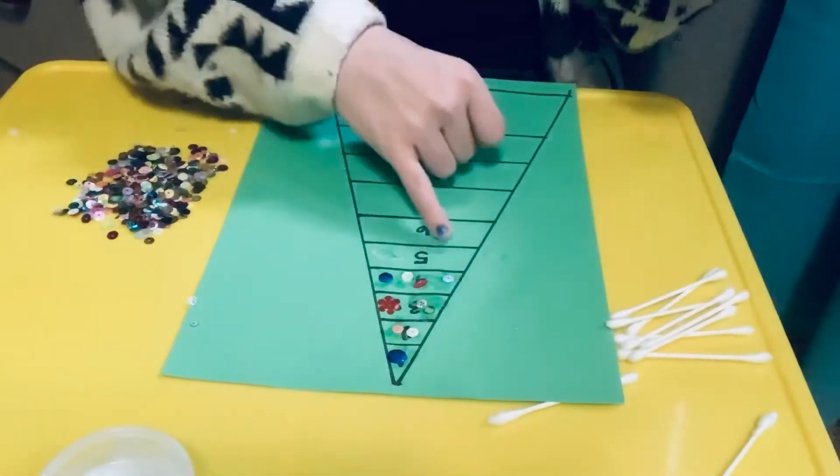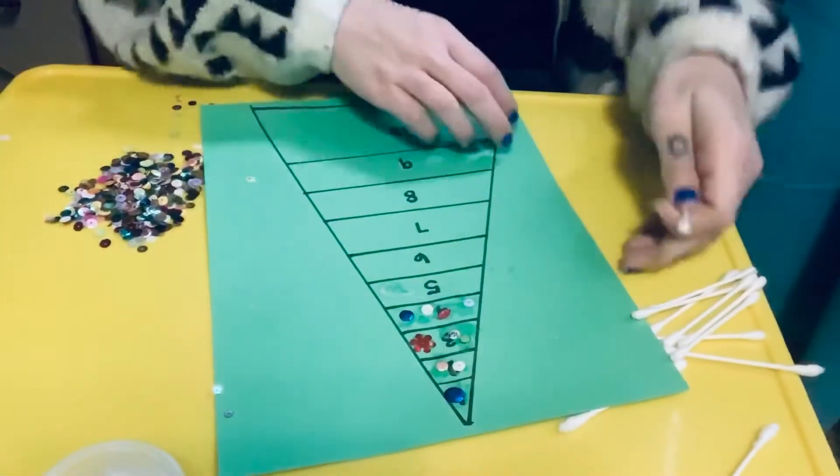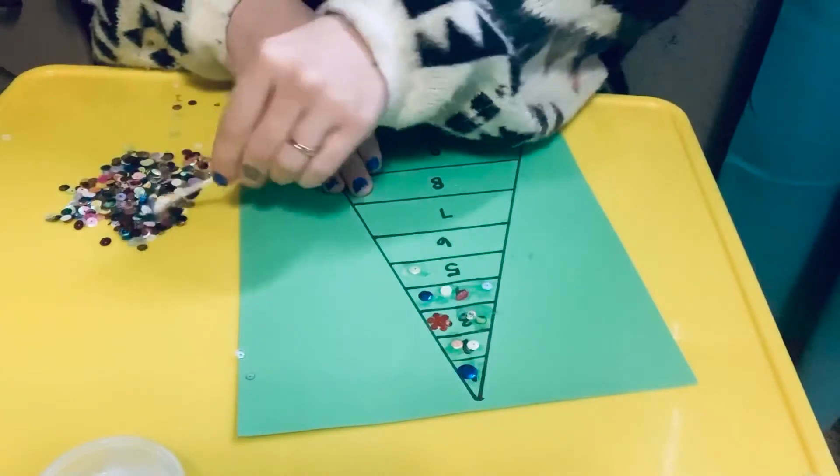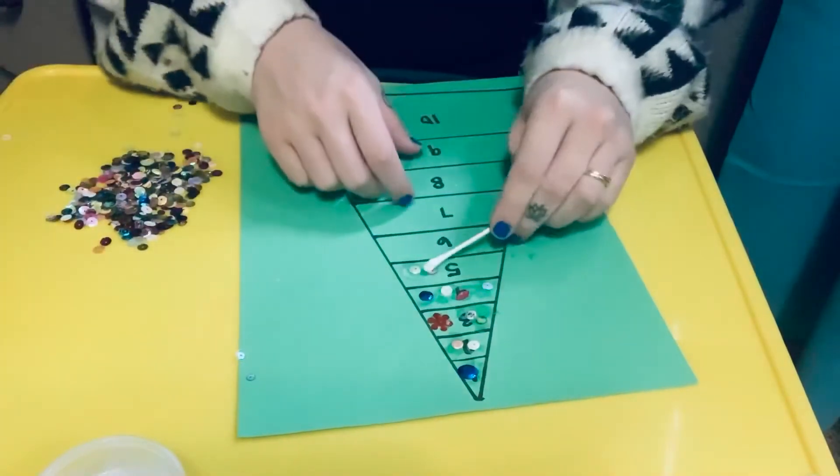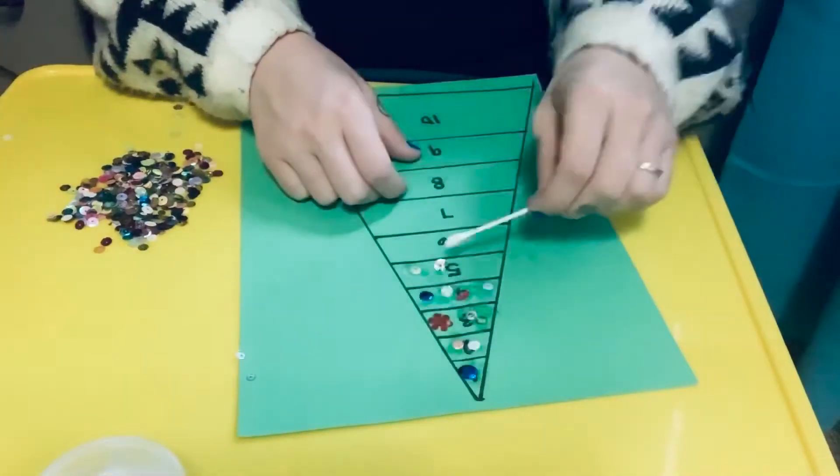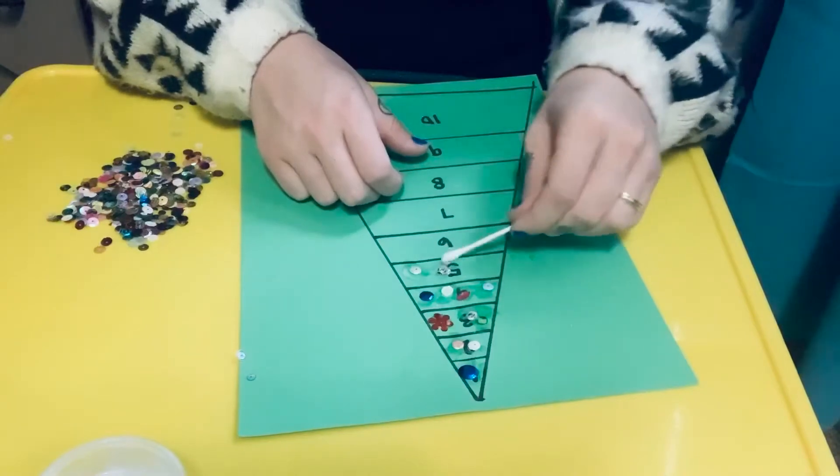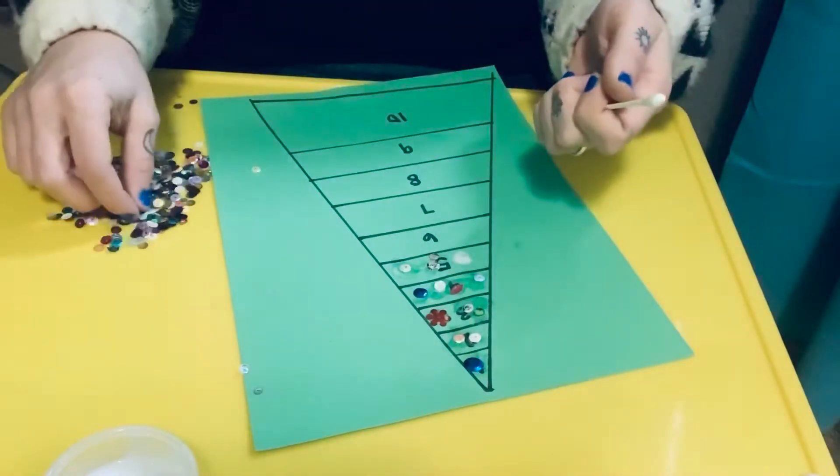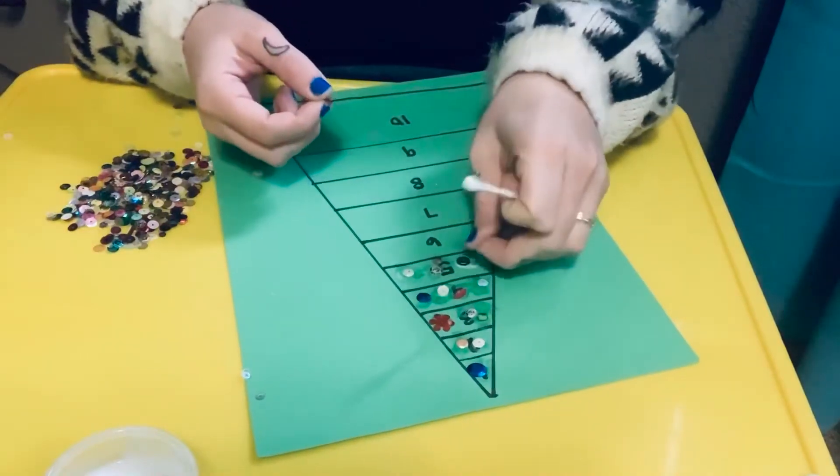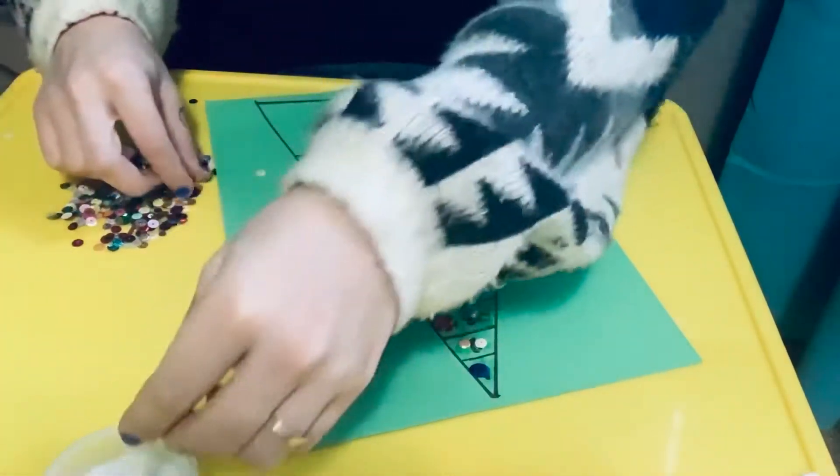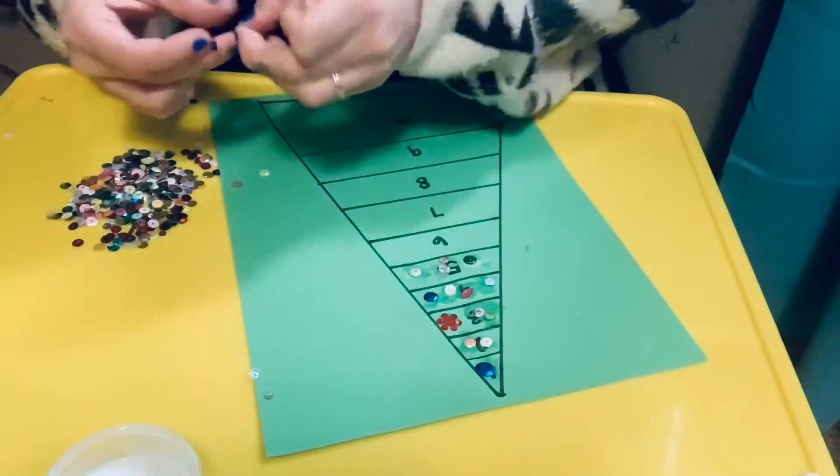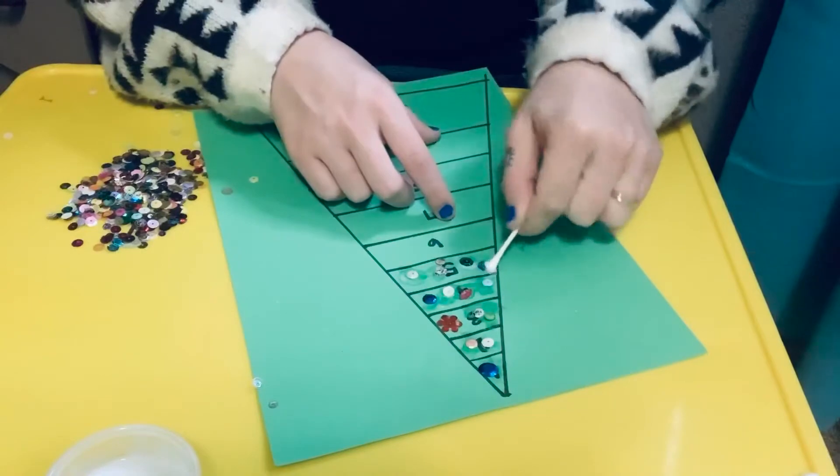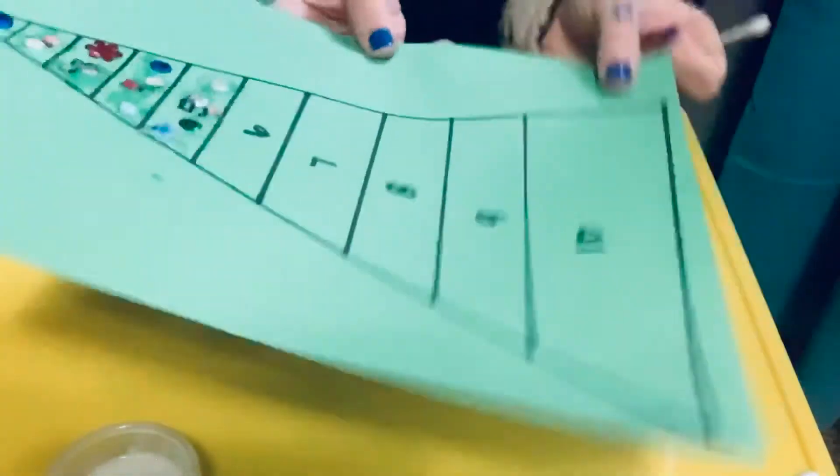Okay, now we're on the number five. So I'm just gonna grab five sequins, four sequins, two, three, three, four, five, five, five. So here's how it's looking, okay.